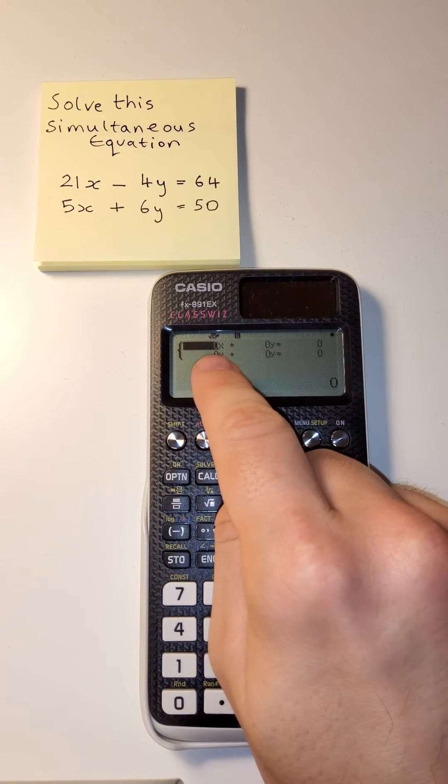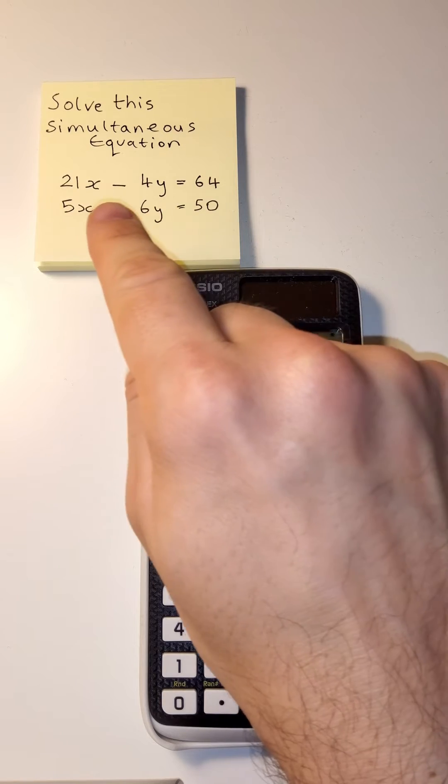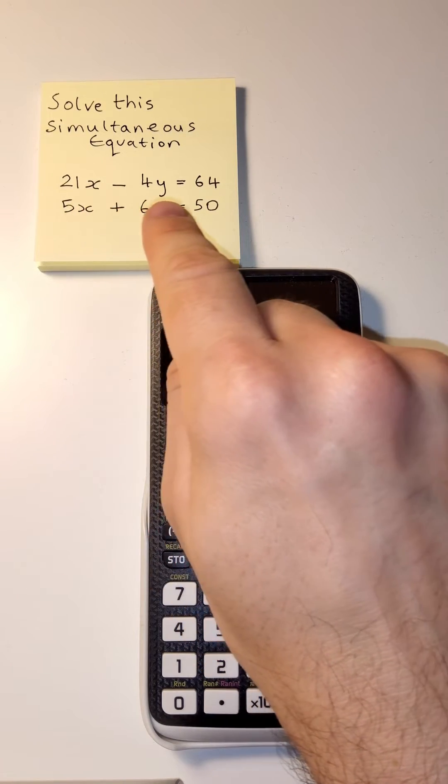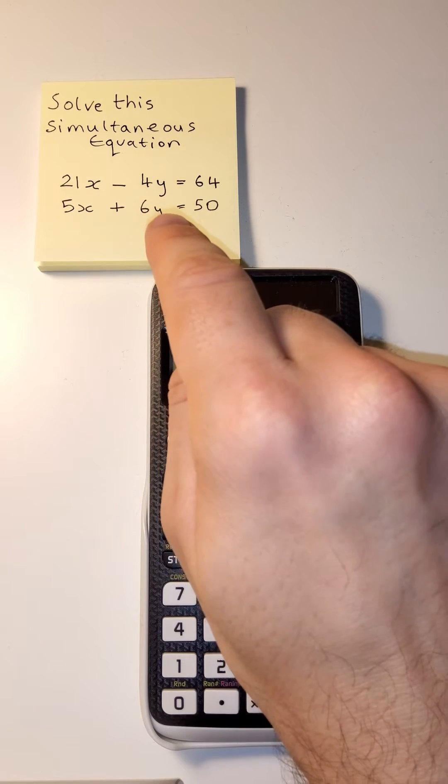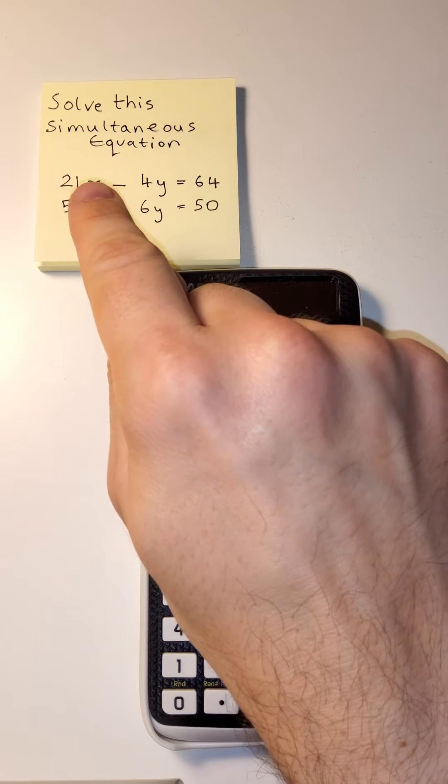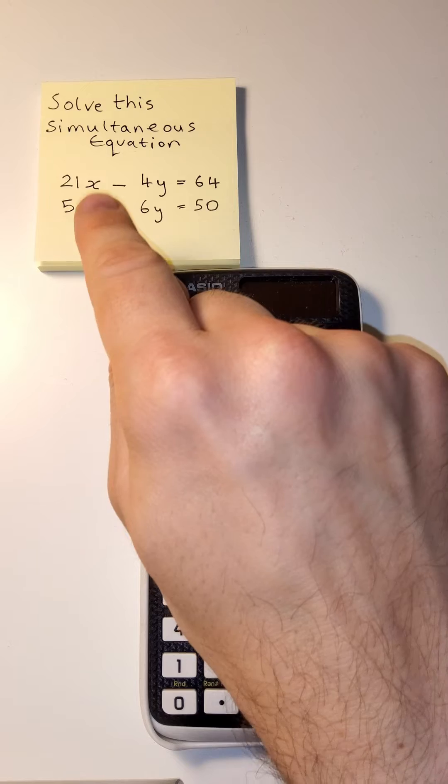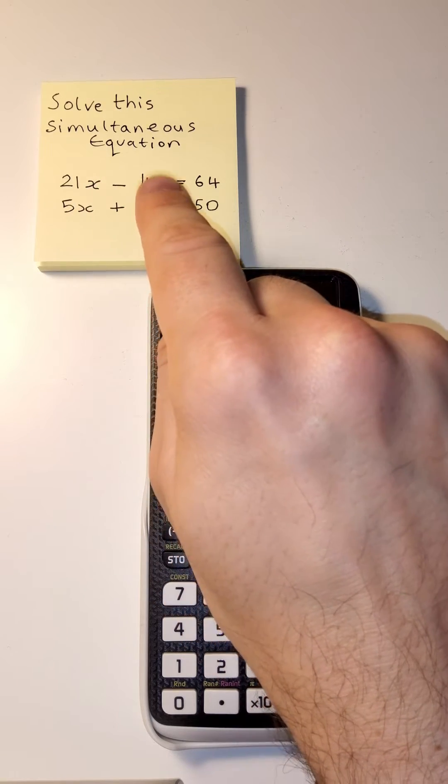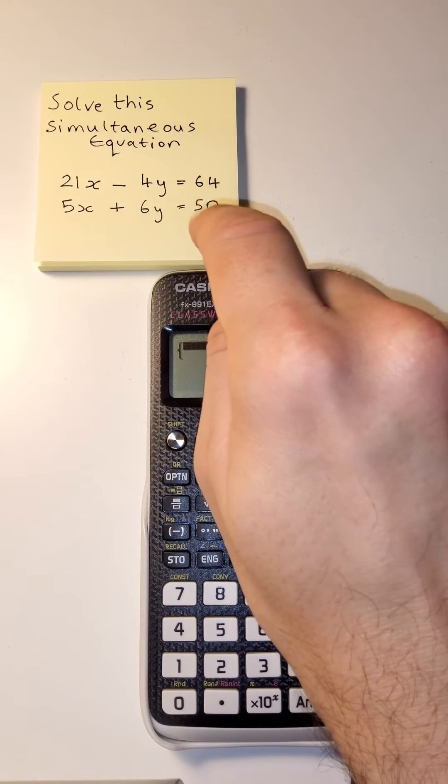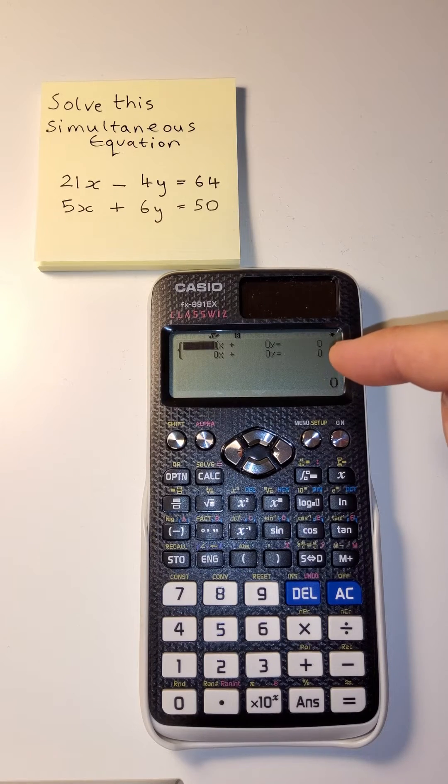And it's now given us the option to input. Now this question is really good because it's already in the format we want. It's not always like this. You're going to need the variable number one in line. You need the second variable in line and then the numbers to the right. That's the form that it is in here.